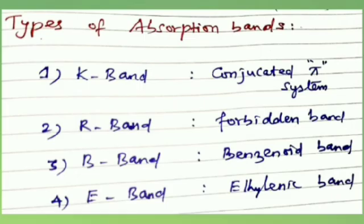The following types of absorption bands originate as a result of possible electronic transitions in a compound. The first is the K-band, which originates due to pi to pi star transition in compounds containing a conjugated system, such as dienes, polyenes, and enones. The epsilon value for K-band is usually more than 10 to the power of 4.